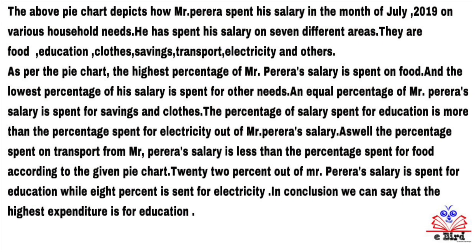The above pie chart depicts how Mr. Pereira spent his salary in the month of July 2019 on various household needs. He has spent his salary on seven different areas. They are food, education, clothes, savings, transport, electricity and others. As per the pie chart, the highest percentage of Mr. Pereira's salary is spent on food, and the lowest percentage of his salary is spent on other needs. An equal percentage of Mr. Pereira's salary is spent on savings and clothes.